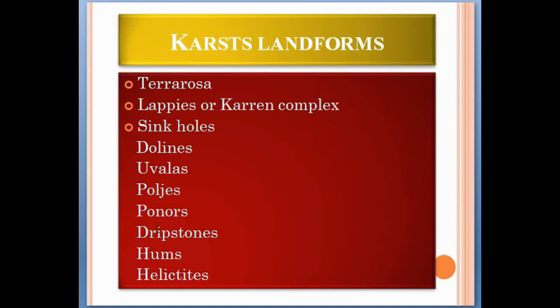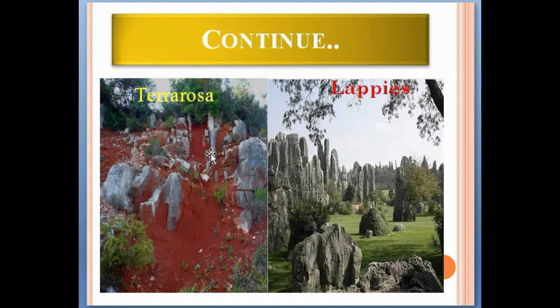Terra Rosa is a reddish clay soil characterized by moderate to gentle slopes in limestone terrains. These are especially found in tropical and temperate regions and often contain red soil, as you can see here.